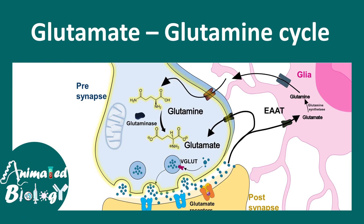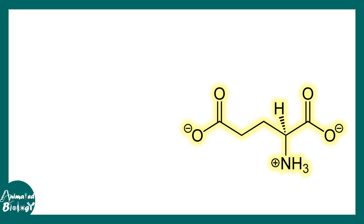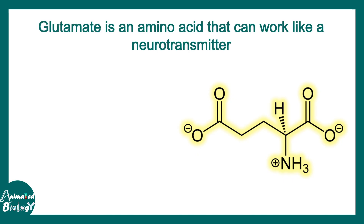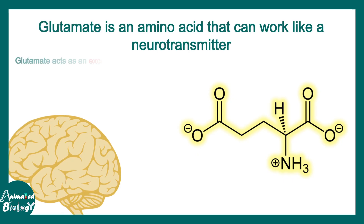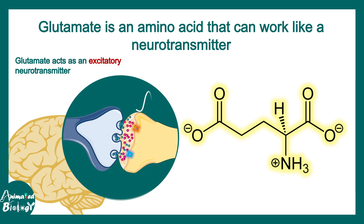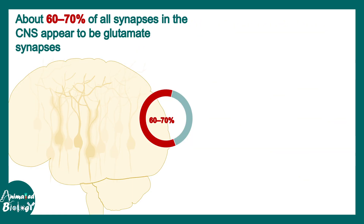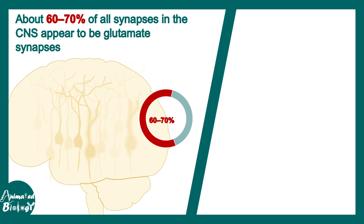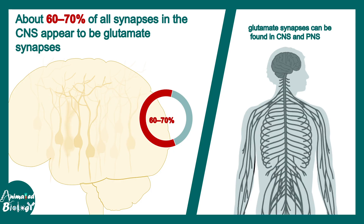In this video we'll talk about the glutamate-glutamine cycle. Glutamate is an amino acid which can also serve as a neurotransmitter. Glutamate is an excitatory neurotransmitter in the brain. In fact, 60 to 70 percent of all synapses are glutamatergic synapses, so it's pretty common in the brain. Glutamatergic synapses can be found in the central nervous system and also in the peripheral nervous system.